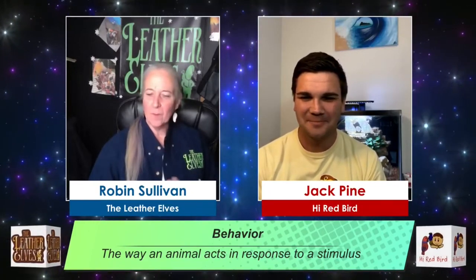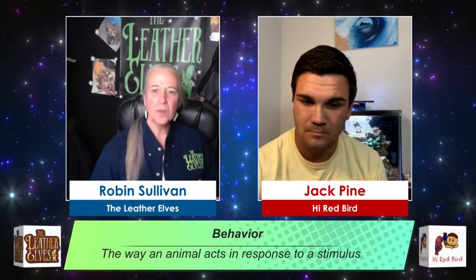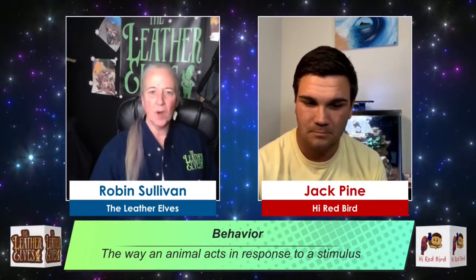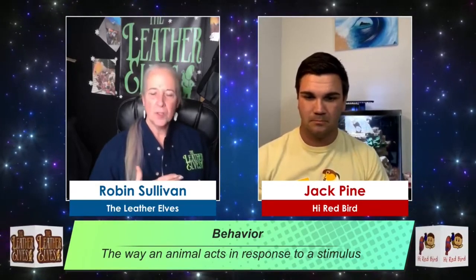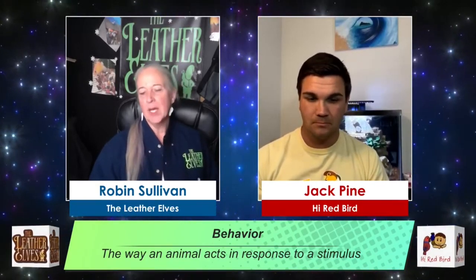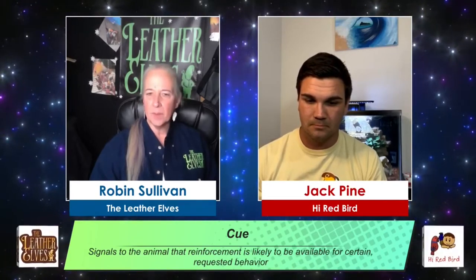Okay, so behavior — we've got that down. We're looking to elicit certain behaviors. We want our animals to act in a certain way — any action they take is a behavior. The next thing we wanted to talk about was a cue. A cue signals the animal that reinforcement is likely to be available for a certain requested behavior. Sounds all fancy, right? A cue is basically your way of letting an animal know, 'I am asking for a behavior and I can provide you reinforcement.'